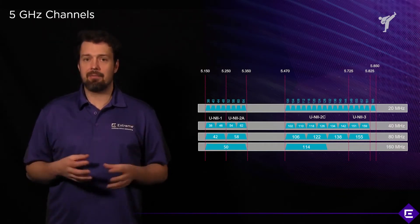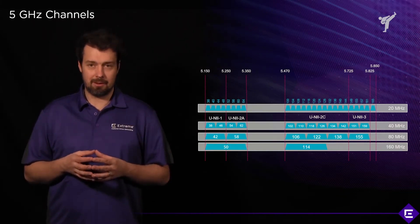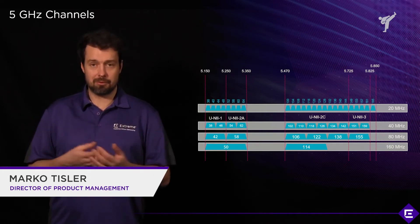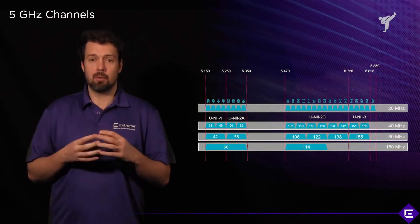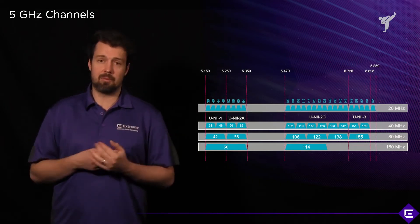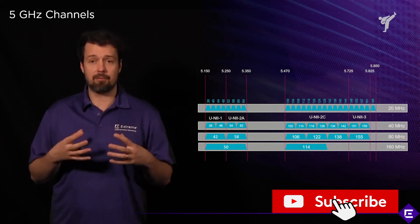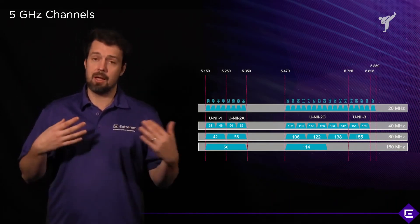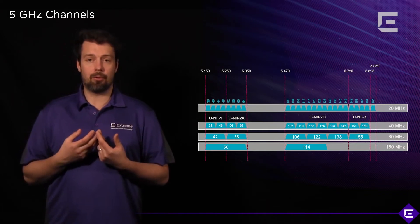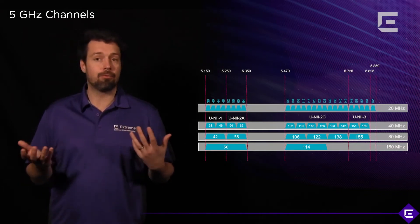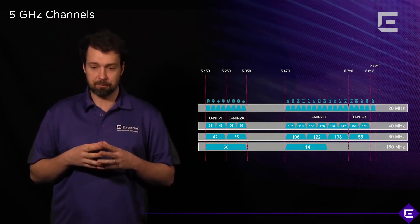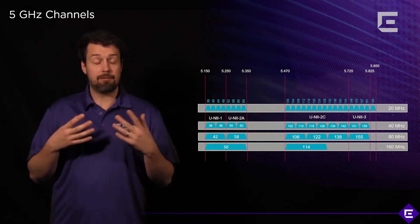Let's take a deeper dive into the 5GHz frequency band. It's important to understand because in a high-density environment — or in most environments where we're deploying Wi-Fi today — 5GHz is actually going to be preferred over 2.4GHz, because 2.4GHz is already congested and it only has three or four non-overlapping channels, depending on which channel scheme you're allowed to use.